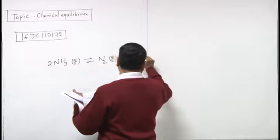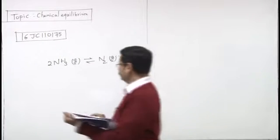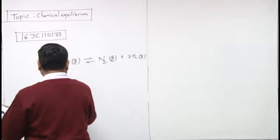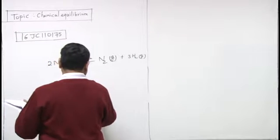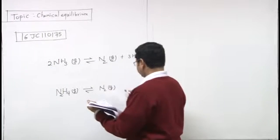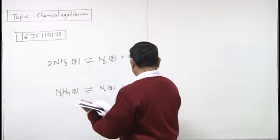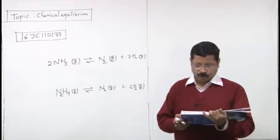N2 gaseous plus 3H2 gaseous, like this. Aur ek hai - and the next one is N2H4 gaseous gives N2 gaseous plus 2H2 gaseous.